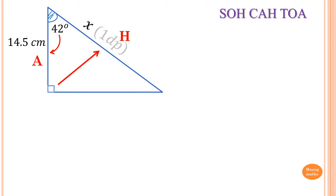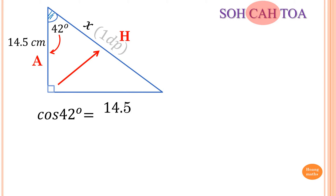So we refer to CAH — C is for cos. Cos is equal to A over H. So cos of whatever the angle is, in this case cos of 42 degrees, is equal to A. A is 14.5 over H.